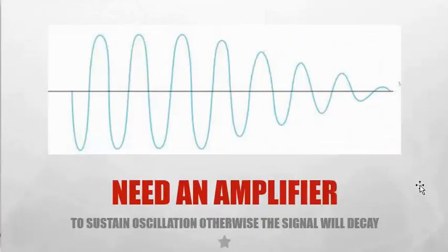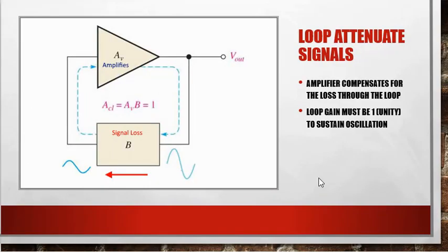We need an amplifier and we need the amplifier to sustain oscillation. Otherwise, the signal will decay. So we'll get initial ringing, it'll start going and then it'll just slowly decay. And the purpose of the amplifier is to stop the decay. So we have our output signal here. We have a nice sine wave, our output.